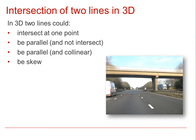If we think about the possible options for two lines in three dimensions, we have that they could intersect at one point, be parallel and not intersect, be parallel and collinear (i.e. the same line), or be skew.